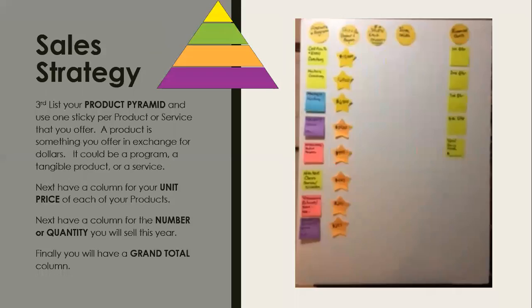Next is my sales strategy. This is a product pyramid where you identify each area of products or services you offer, your price point, and how many units you will sell at each price point. You then multiply to get your grand total, and as you can see on the far right, I also divide it into quarters. This is how I come up with my sales strategy and end-of-year sales target.